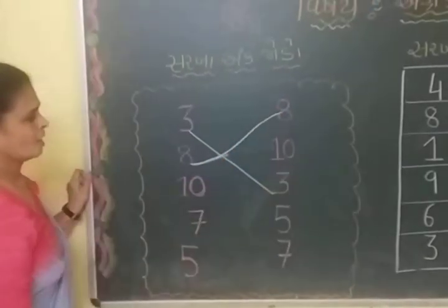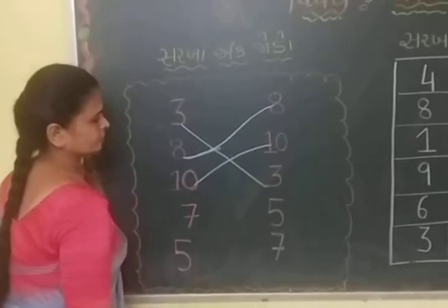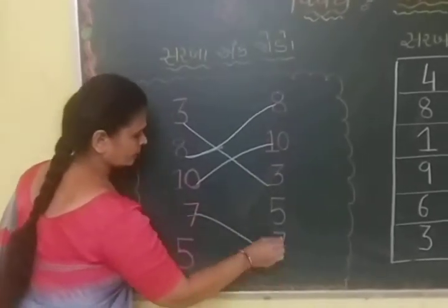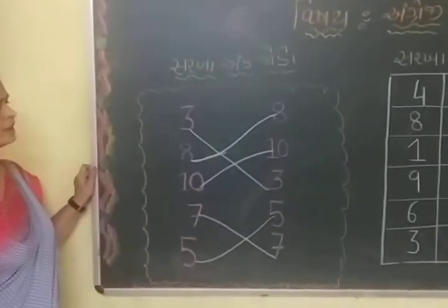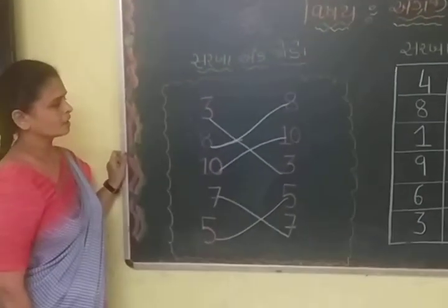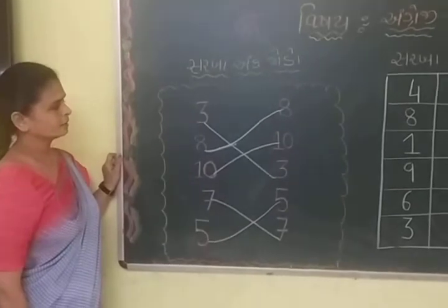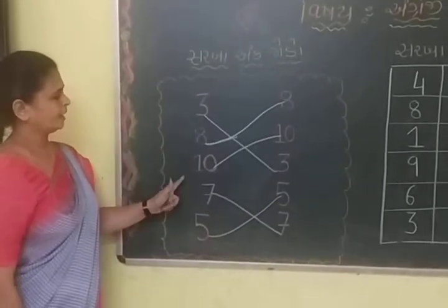Two, zero, ten, seven, five. And then, two, zero, ten, seven, five.